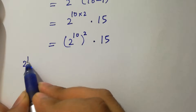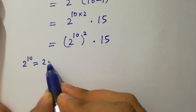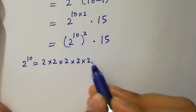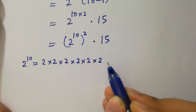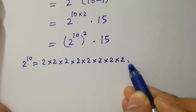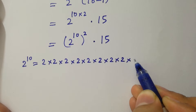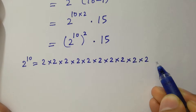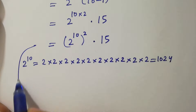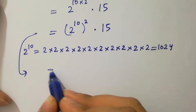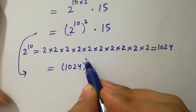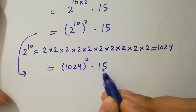Now 2 to the power 10: 2 times 2 is 4, 4 times 2 is 8, 8 times 2 is 16, 16 times 2 is 32, 32 times 2 is 64, 64 times 2 is 128, 128 times 2 is 256, 256 times 2 is 512, 512 times 2 is 1024. So 2 to the power 10 equals 1024, giving us 1024 to the whole power 2, times 15.